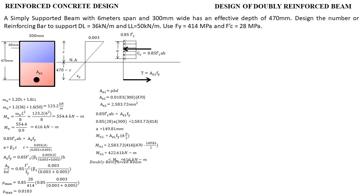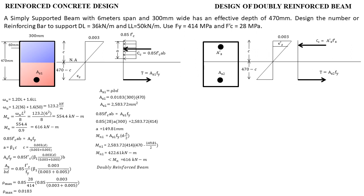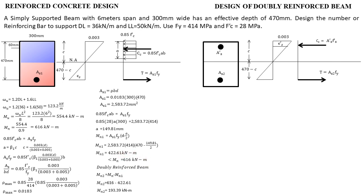Since MN1 is below the required, we will design it as a doubly reinforced beam — we need additional reinforcing bars. The difference between MN and MN1 gives us MN2. Looking at the strain and stress diagram for the doubly reinforced beam, MN2 is the steel-to-steel moment: MN2 = MN − MN1 = 616 − 422.61 = 193.39 kN·m. This is the moment that the additional steel-to-steel couple must produce.